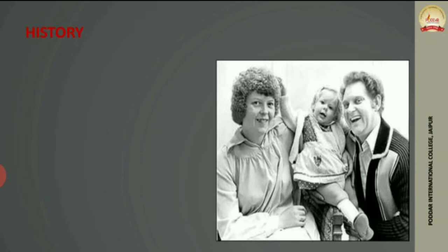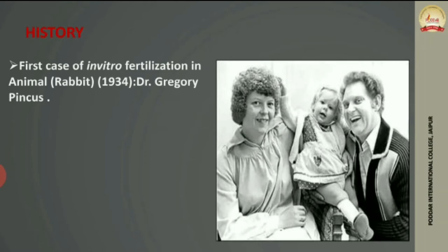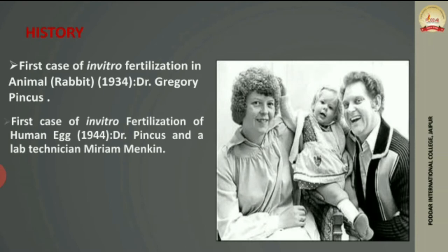This is the basic outline of IVF. This technique is not very new — there has been a lot of development. First, it was done with animals; the first animal in vitro fertilization was done by Dr. Gregory, carried out in the rabbit. The first human egg fertilization was done for the first time in 1944 by Dr. Pincus.